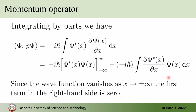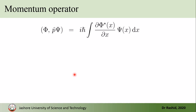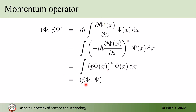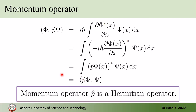We know that as x goes to infinity the wave function must become zero, so the first term on the right side is equal to zero. Therefore we are left with this. If I take i h-bar inside the complex conjugate, we write it like this — because complex conjugate is used, I use minus i. By definition this is p-hat, so we have finally p-hat phi and psi. From the definition we see that since we can take p-hat from the second function to the first function, p-hat is also a Hermitian operator.